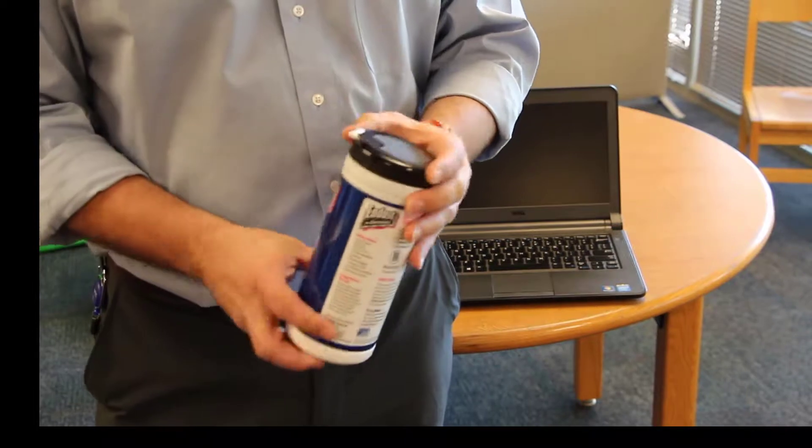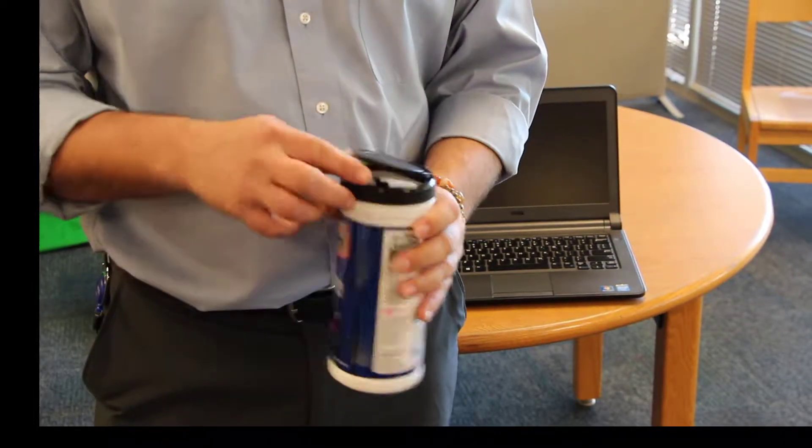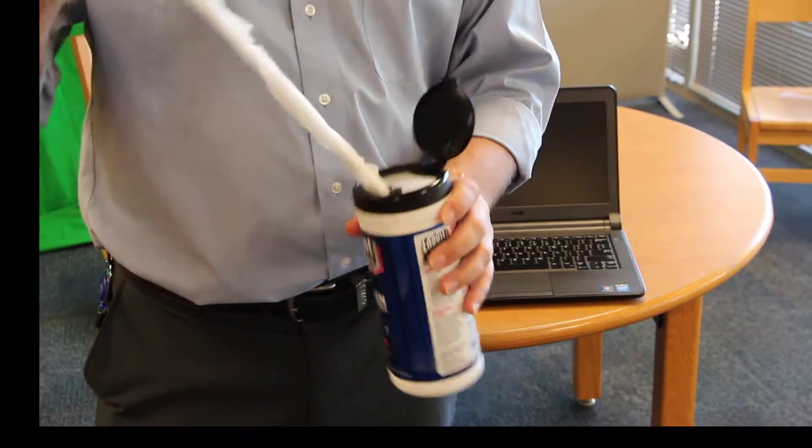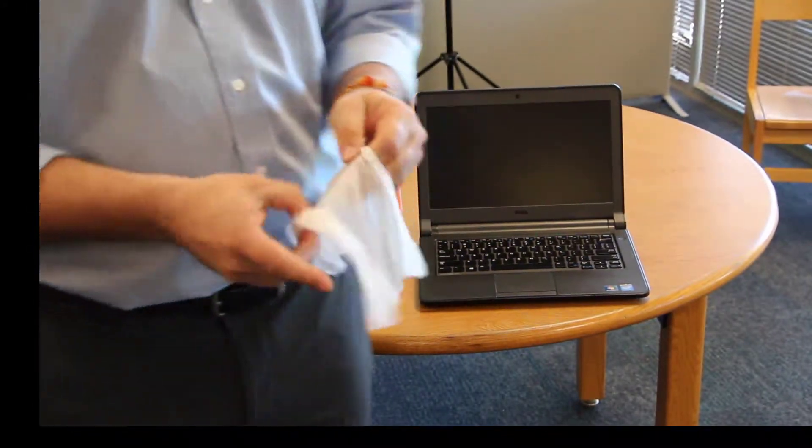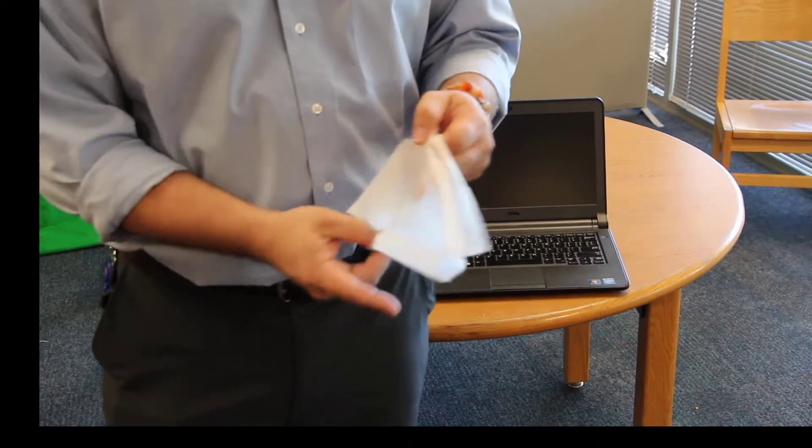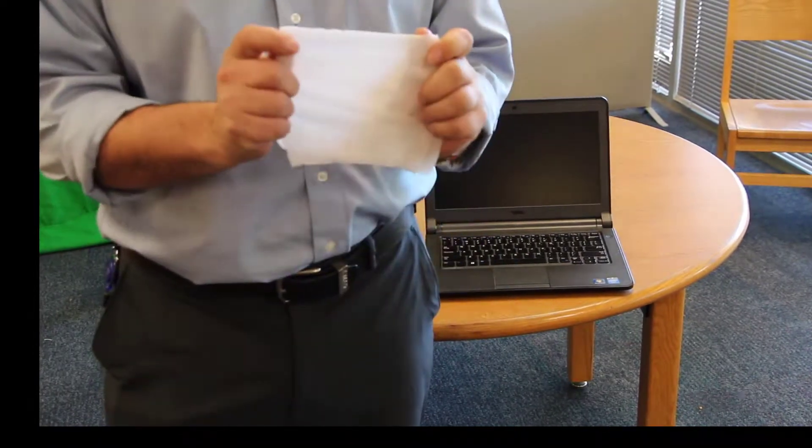Start by grabbing two wipes from the container. Folding them in half, begin wiping your laptop from side to side, and then up and down the keyboard.